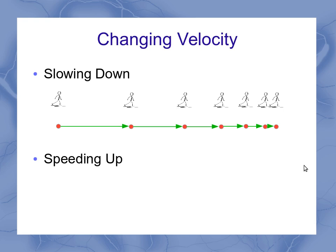We can look at the same sort of thing with Al speeding up. In this case, he's starting out much closer together and ending up much further apart. So we start with much smaller velocities and we end up with much larger velocities.